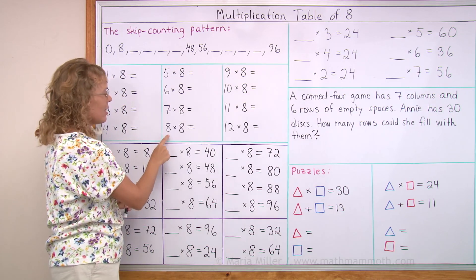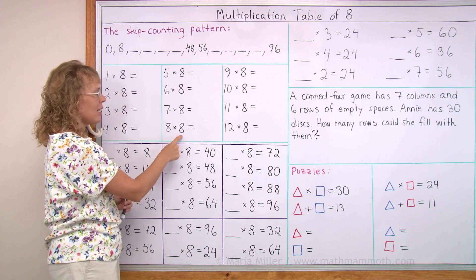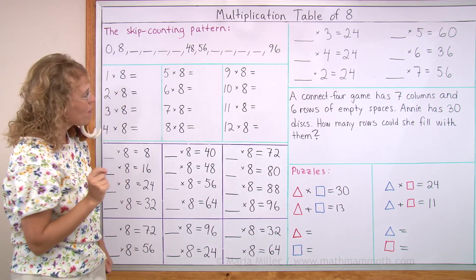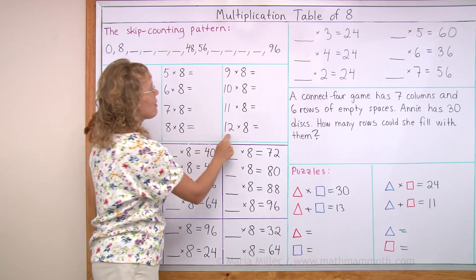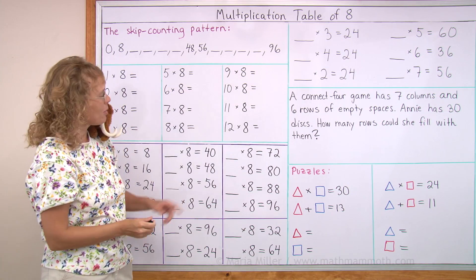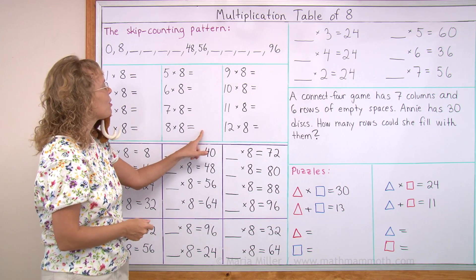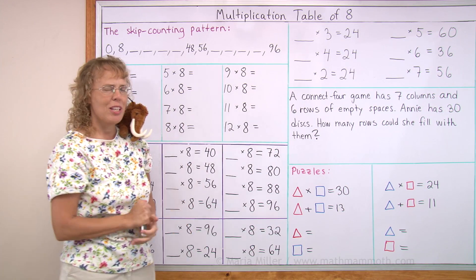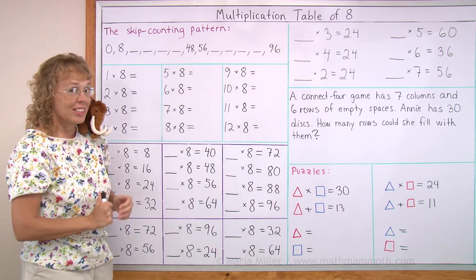Now the new ones are here: 8 times 8 equals 64, and 12 times 8 equals 96. So that's 64 and 96. Okay? And now let's get going.